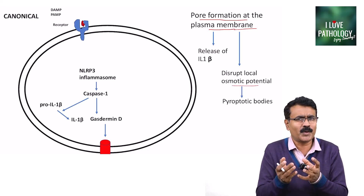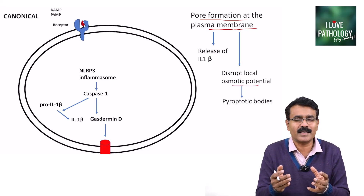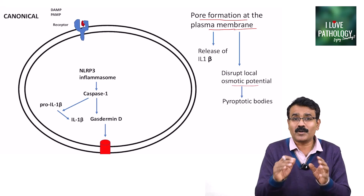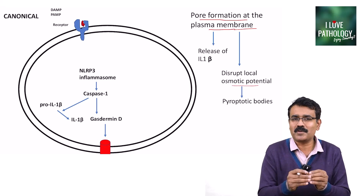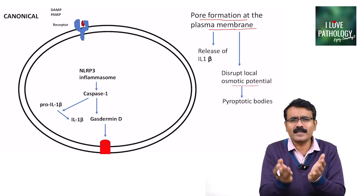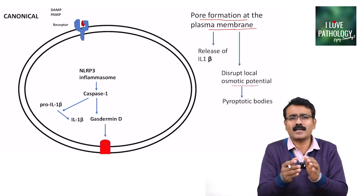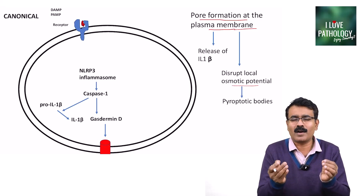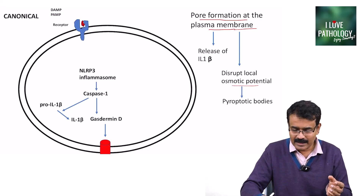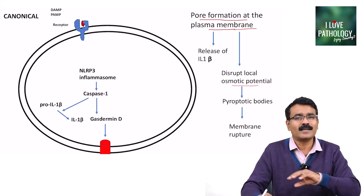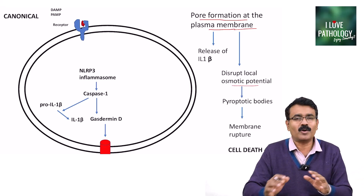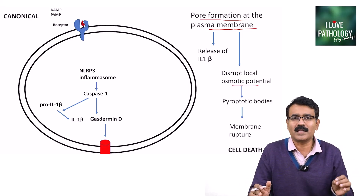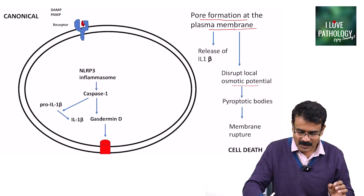Due to pore formation at the plasma membrane, the activated interleukin-1-beta comes out through these pores. The pore formation also results in disruption of osmotic potential, leading to pyroptotic bodies — analogous to apoptotic bodies — which are blebs on the cytoplasmic membrane. Ultimately, there is membrane rupture leading to cell death. This is the canonical pathway of pyroptosis.